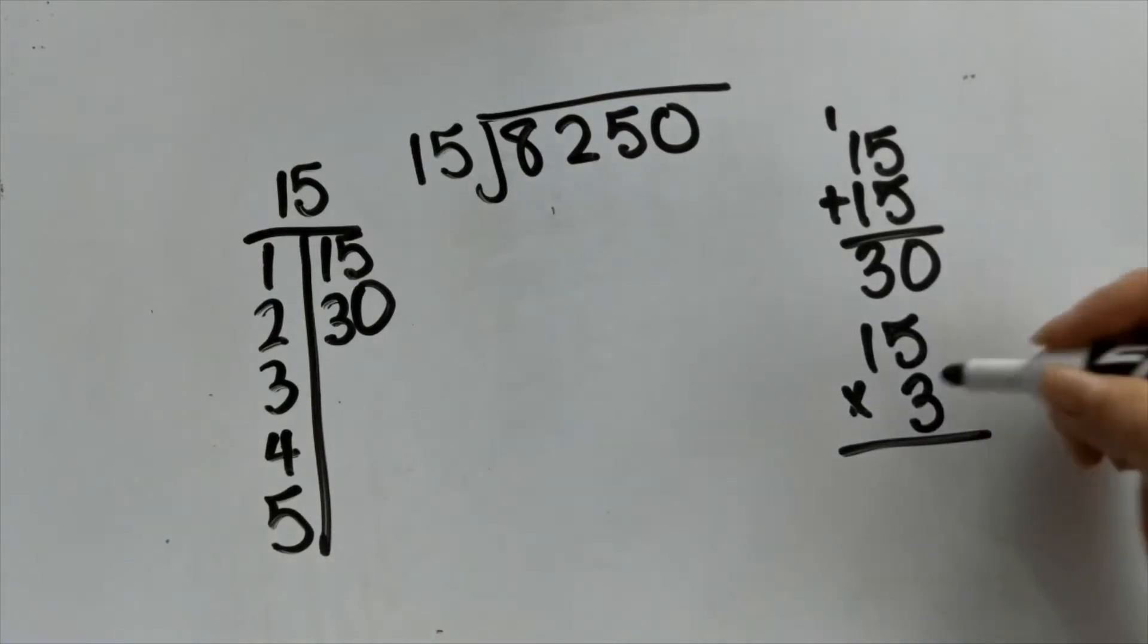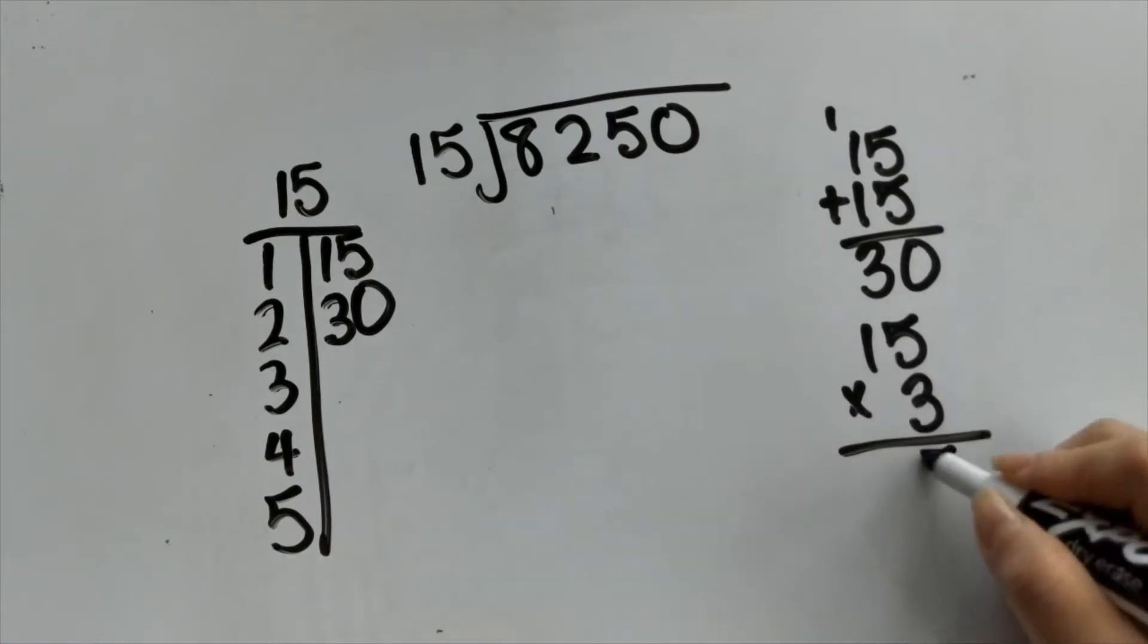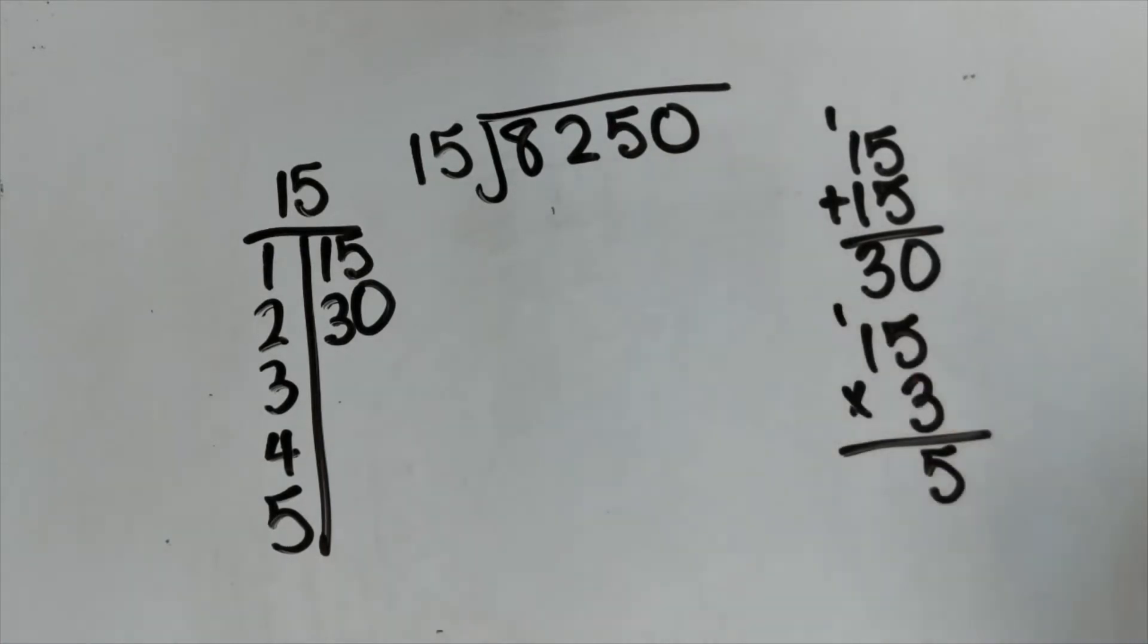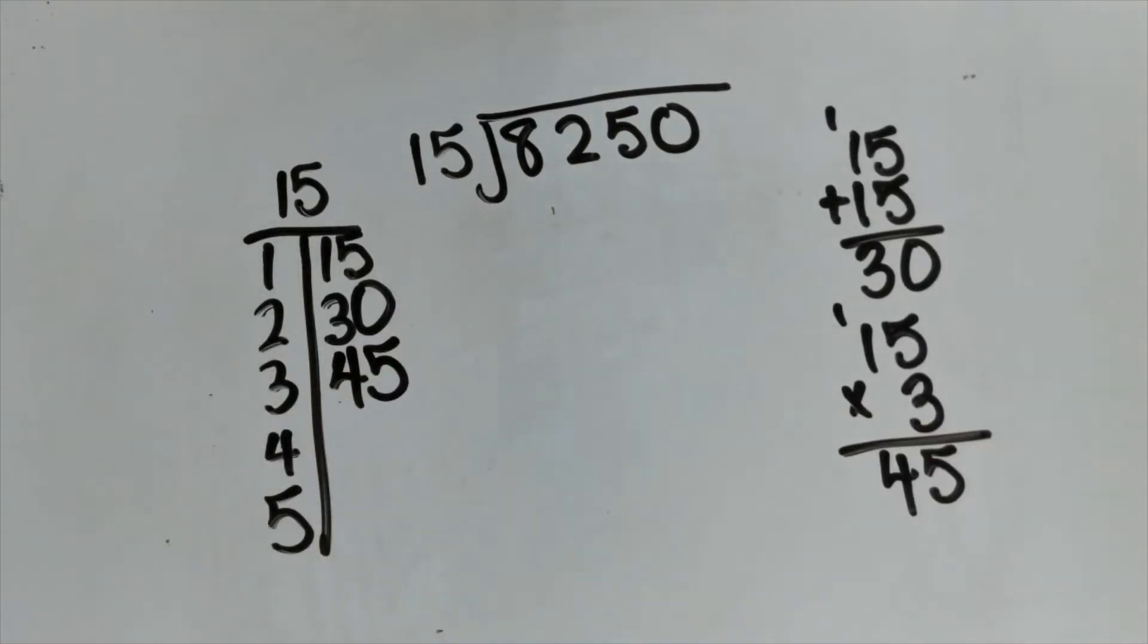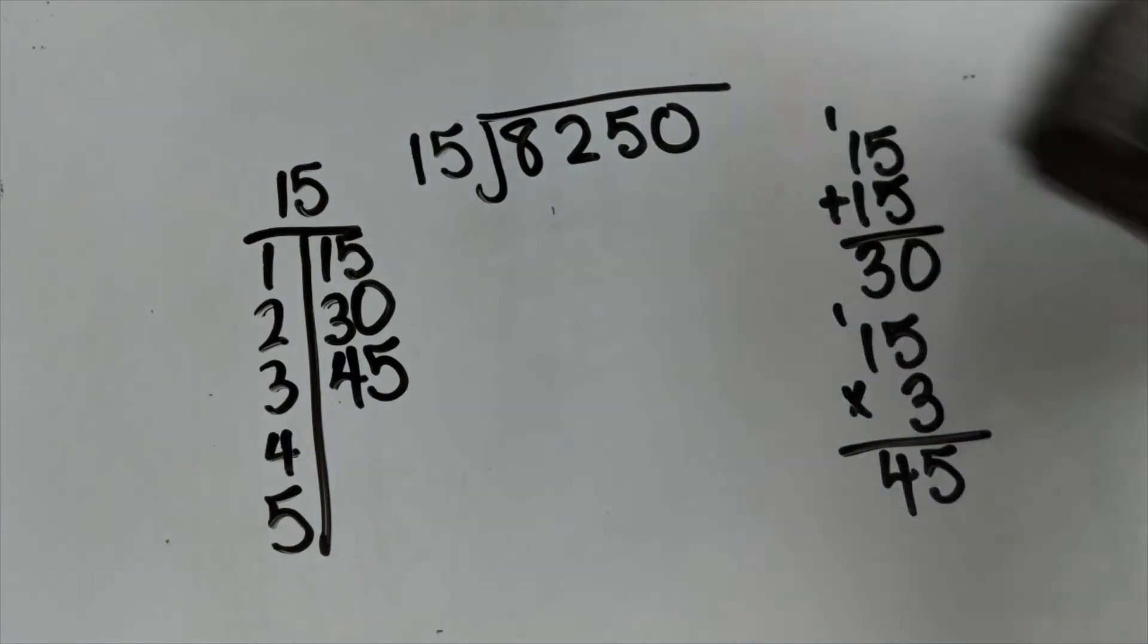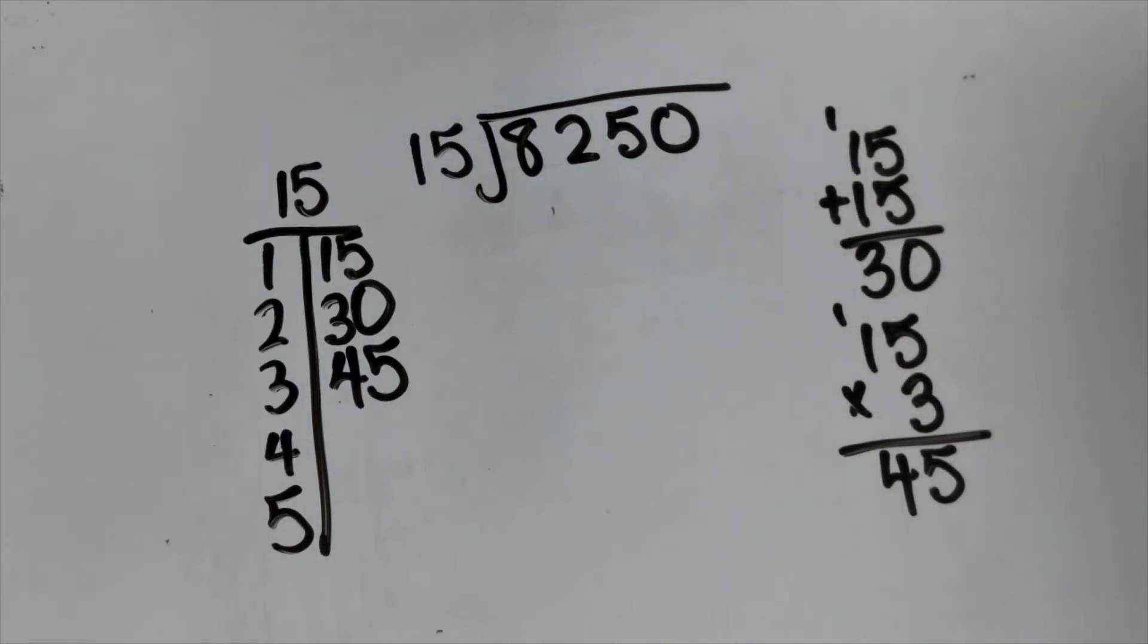I'm just going to multiply instead rather than adding. You can add if you want to, I just want to show you a different way. So 3 times 5 is 15, I put the 5 down and bring the 1 over. 3 times 1 is 3 plus the 1 is 4, so now I just bring this over here to 45. And you continue to build this until you get to 5 just like I said.